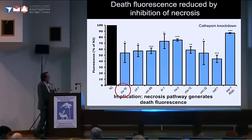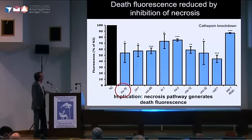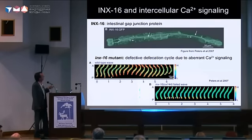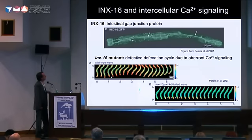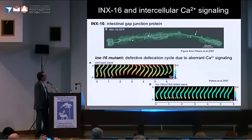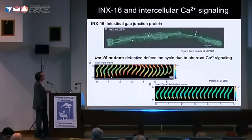I'd like to focus on INC-16, which is a very interesting gene. INC-16 is a gap junction protein required for calcium influx into cells, and it has been studied in the context of the defecation cycle. In C. elegans, there's an influx of calcium into the intestine that moves in a wave along the worm, and the mutants are defective in this cycle. A publication from Peters et al. 2007 shows the level of calcium in the intestine, and you can see a wave of increase in calcium during the defecation cycle. In the INC-16 mutant, the wave fails. This simply reminded us of the wave of death fluorescence, and led us to wonder whether calcium signaling is involved in the propagation of this wave.